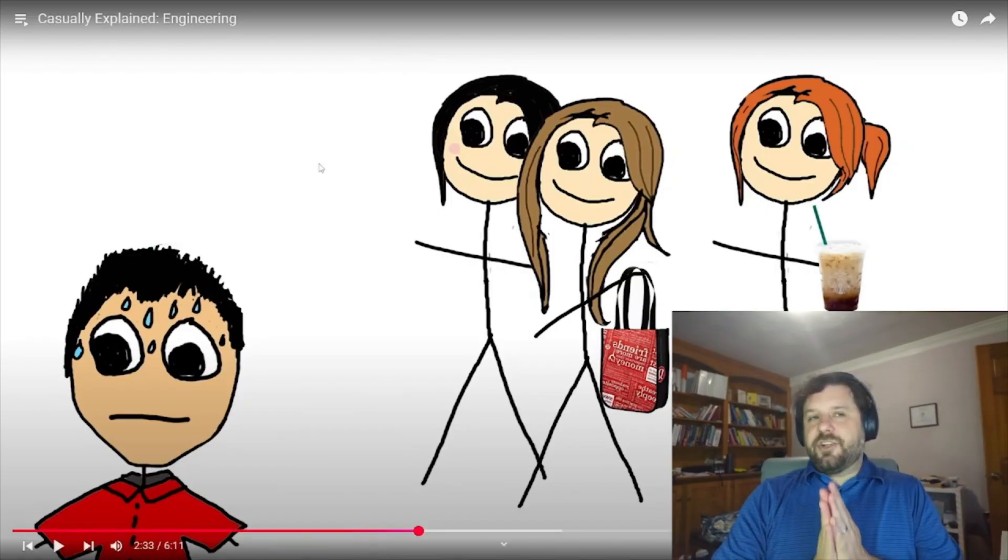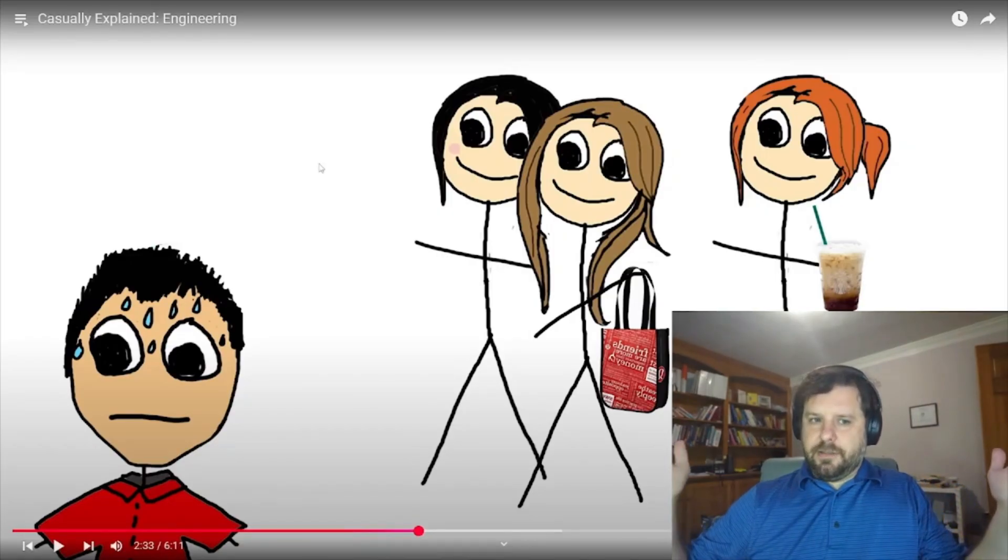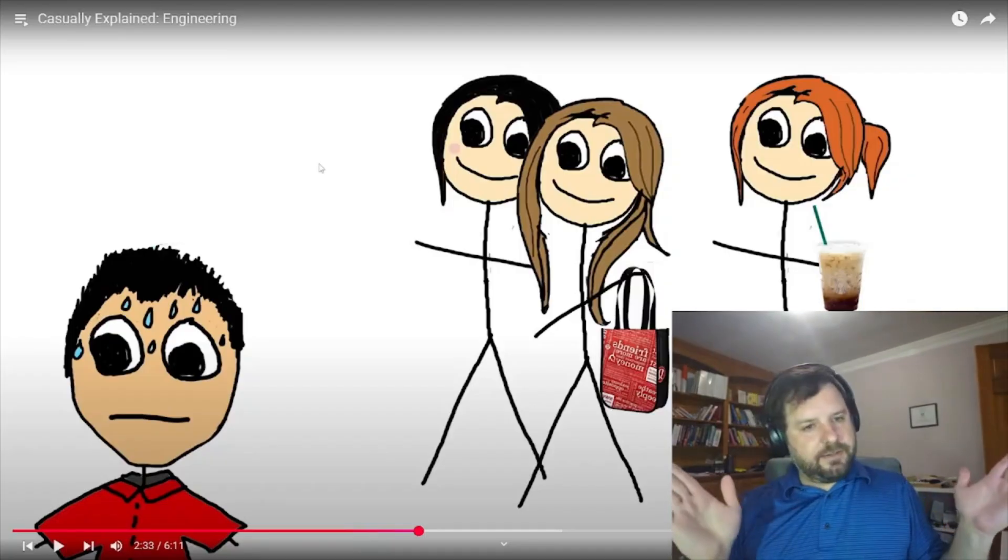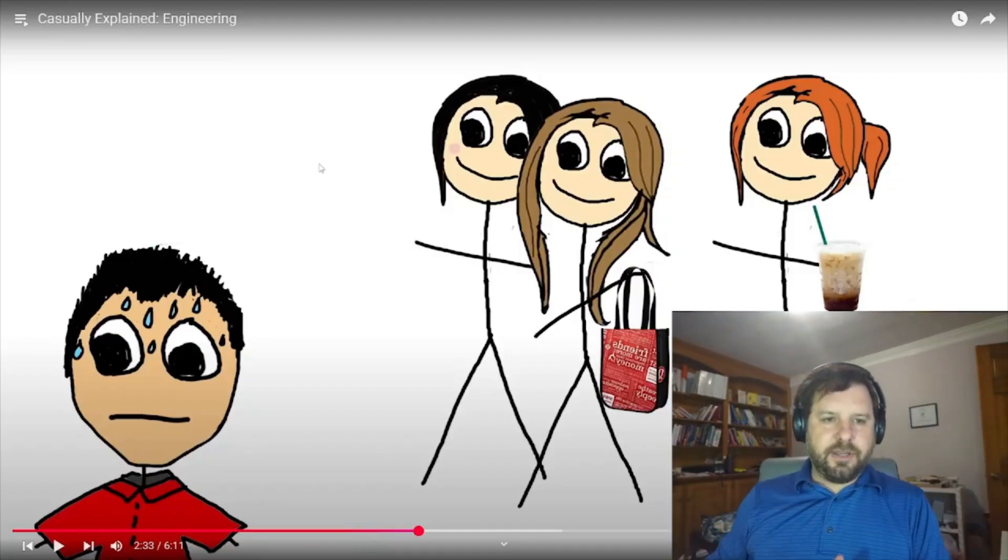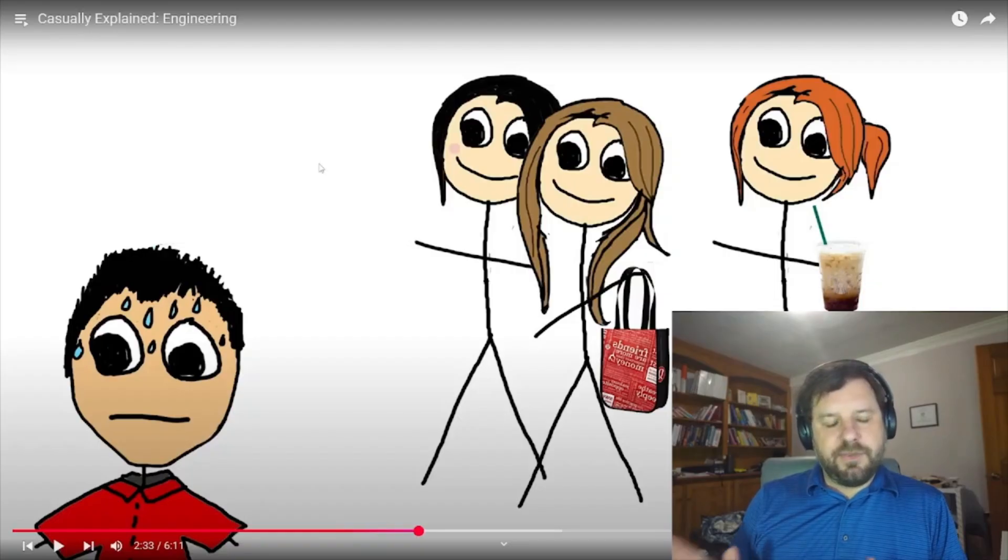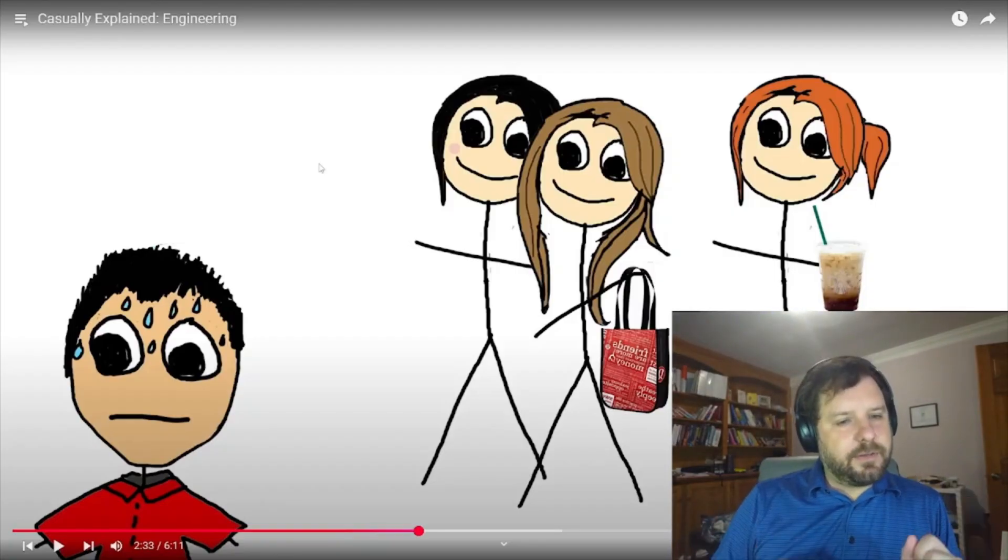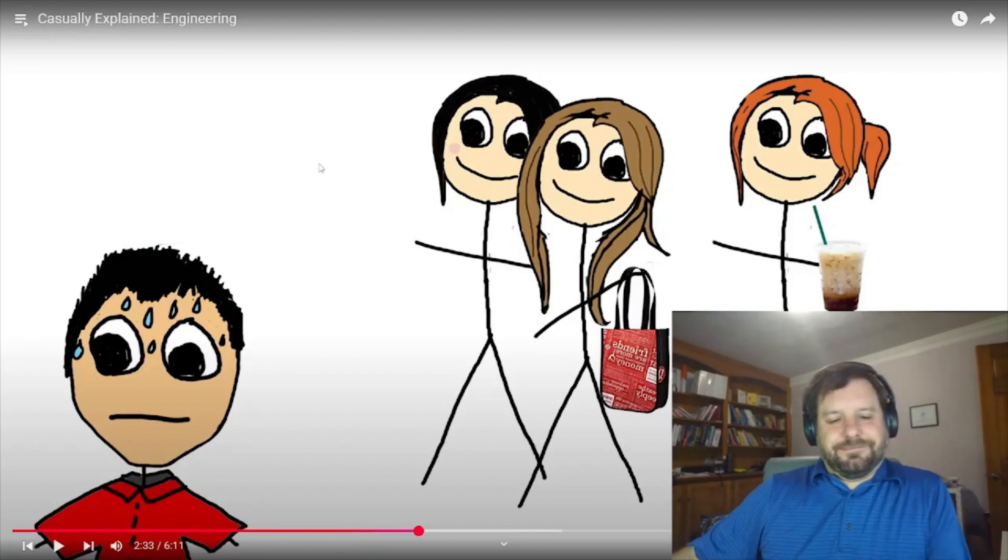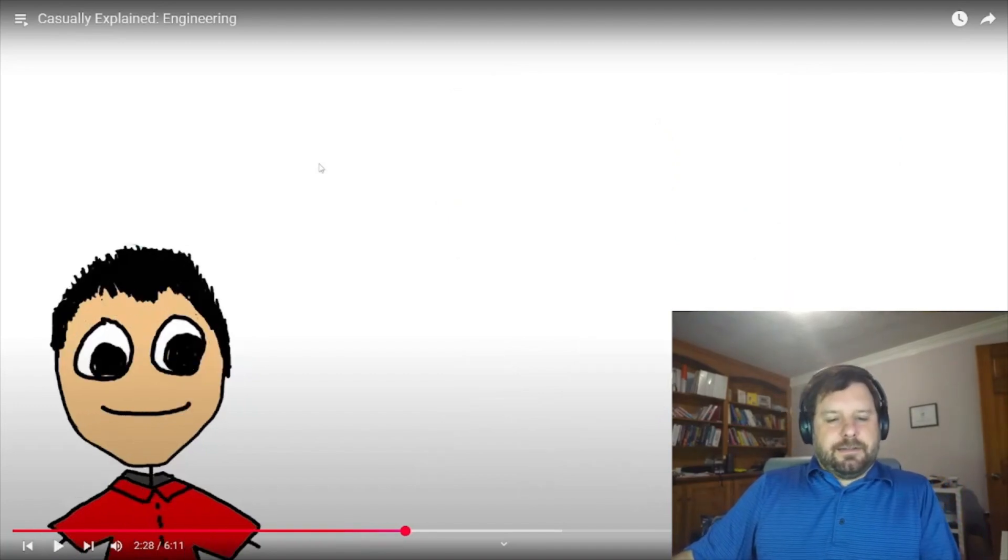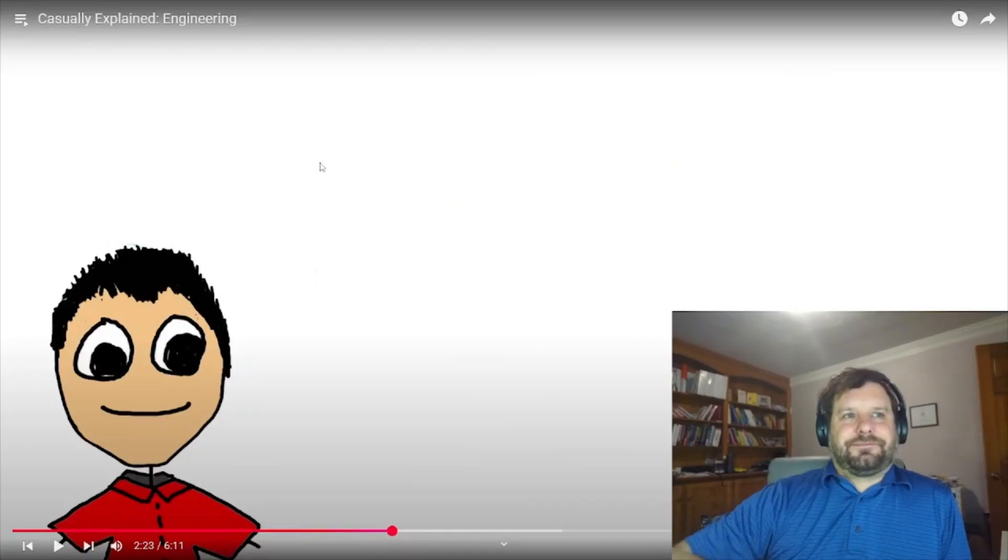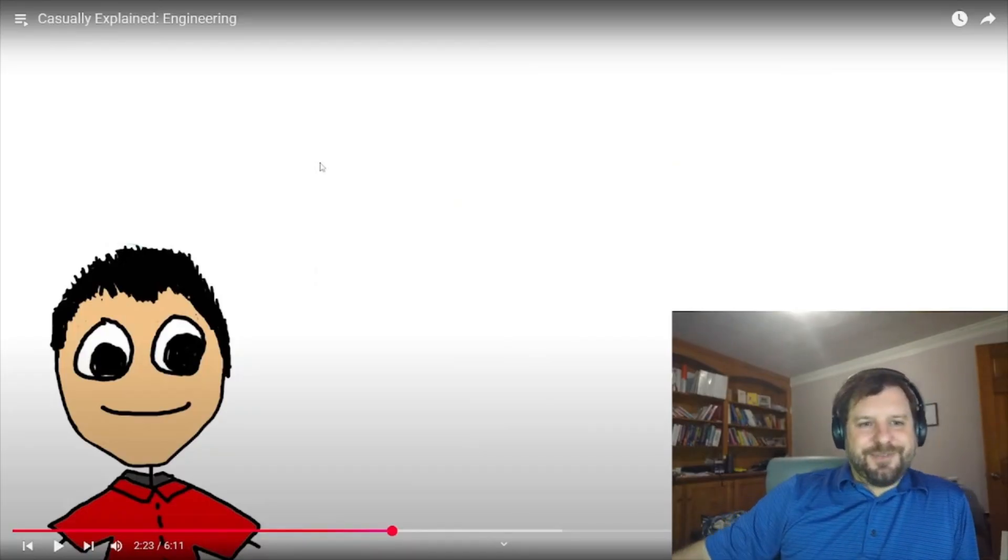...engineers split. They're either real organized, everything has its place, or it looks like total chaos, but they know where everything is. I'm the later. You can see the chaos in the background of my office. But I know where everything is.